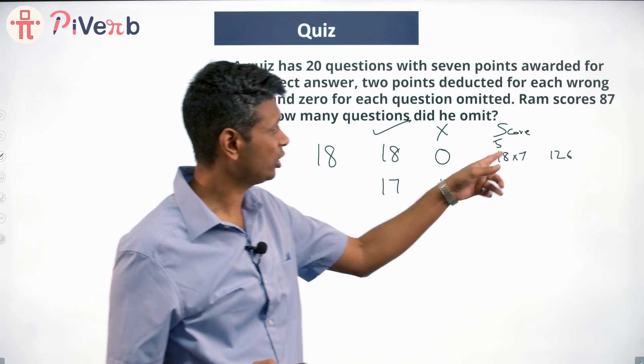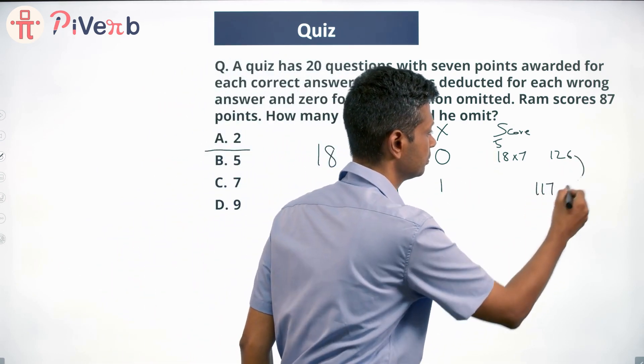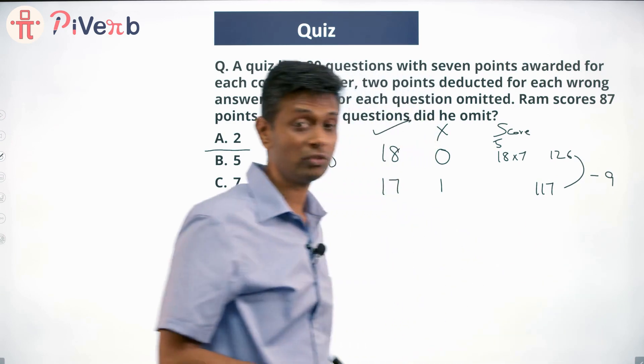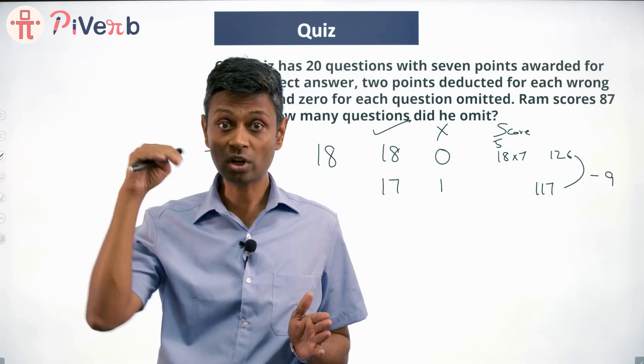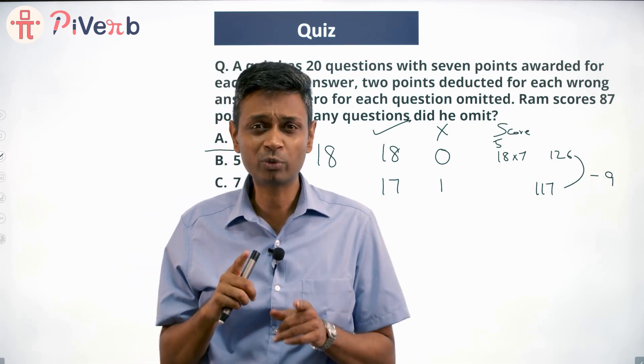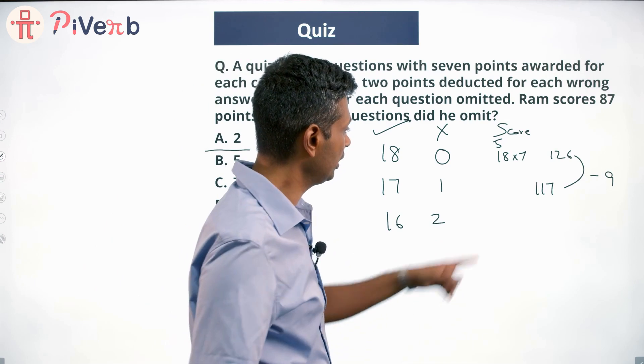So instead of getting 126, he will get 117 minus 9. Instead of a plus 7, he has a minus 2, so his score falls by 9.